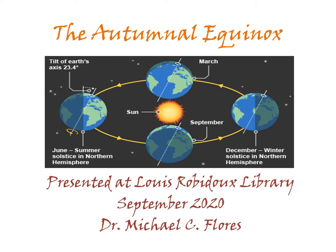Our earth is a wonderful place, and so many things happen that we simply don't always pay attention to. Today, we'd like to discuss one of those changes. The autumnal equinox is a time in which the earth is tilting and turning around the sun — a 365-day, one-year cycle — just as we turn on our own axis every 24 hours. These cycles define our seasons, our days, our years.